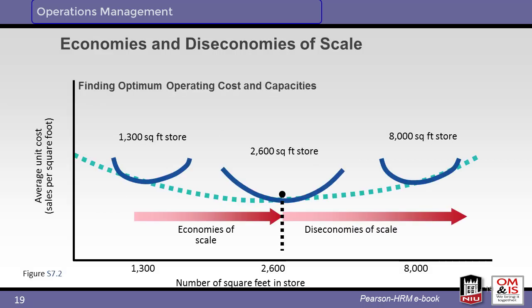Typically, we expect there to be economies of scale — the unit cost should go down with increased volume. This is not always the case. The graph shows an example where a larger store may not be more cost effective. The 2,600 square foot store offers the lowest unit cost. Any store larger than that would be a diseconomy of scale.